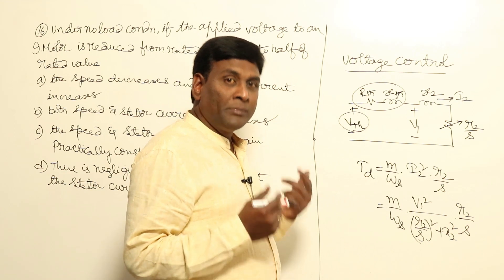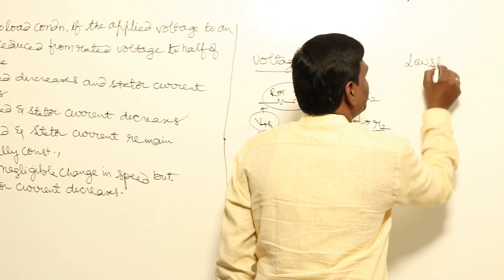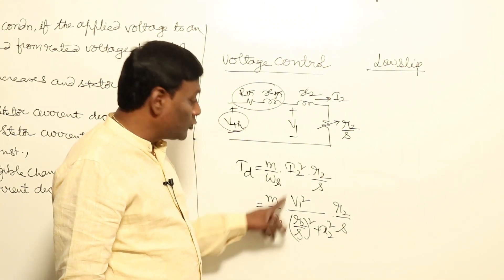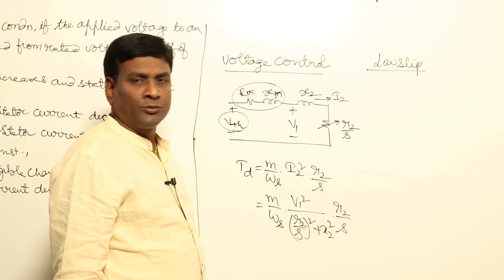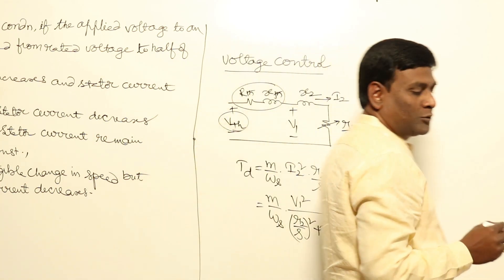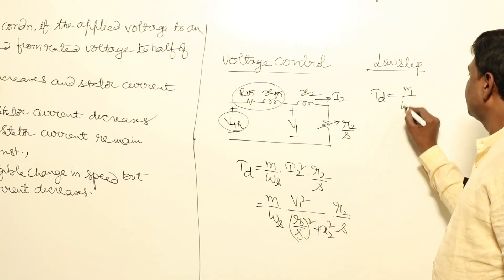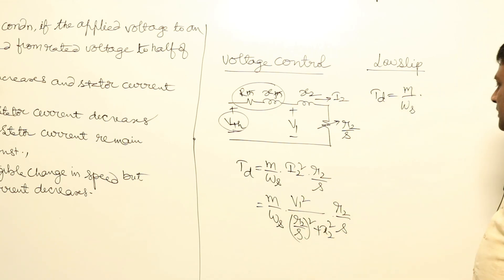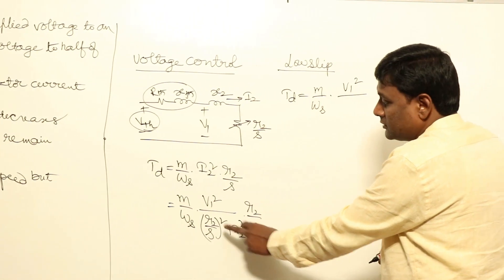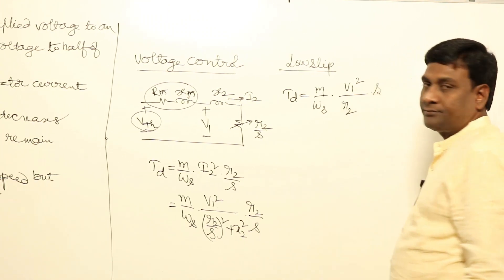We can divide this into low slip region and high slip region. In the low slip region, slip is less. R2 by S is going to be more. Under that condition, let us neglect X2. If we neglect X2, TD is approximately M by omega_S into V1² divided by (R2/S)², which simplifies to R2 × S.